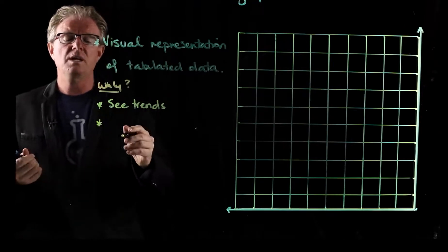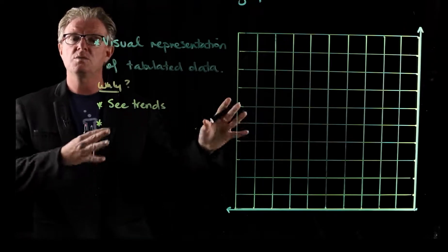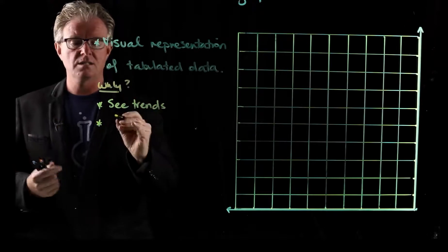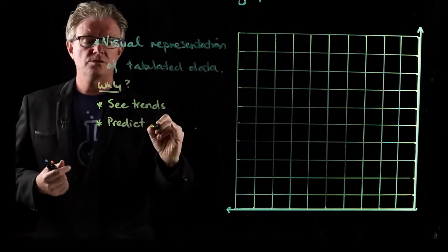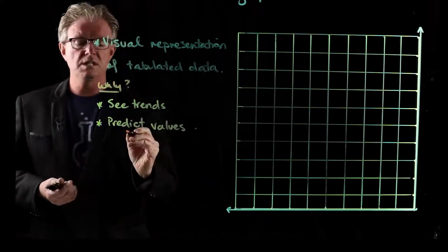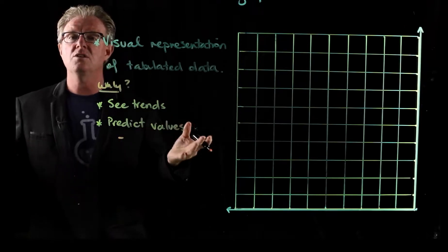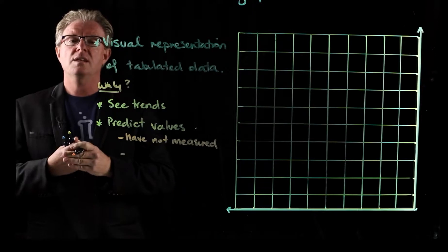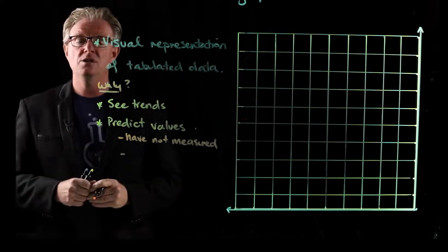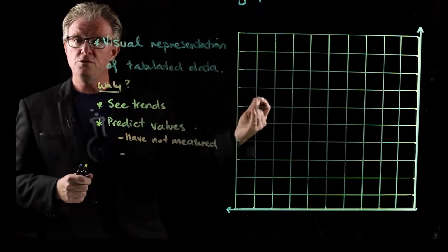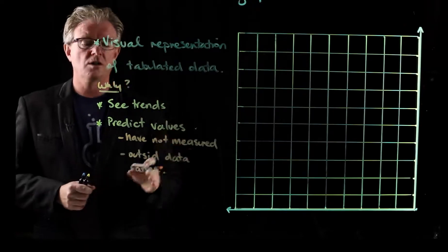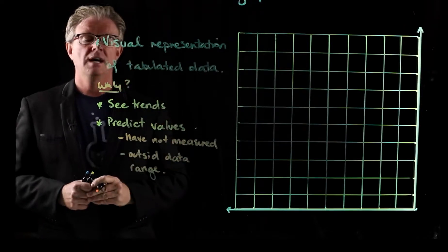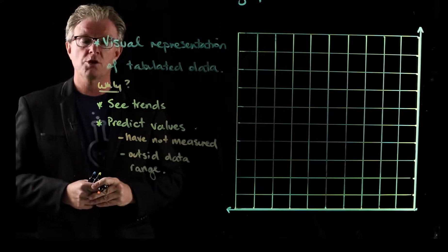Now not only can we do that, we can use the data once we've identified the trend to predict. We can predict values that we don't or haven't measured. And they can be values that are outside our data range, outside or in the future. And we'll make a video on those types of predictive skills.